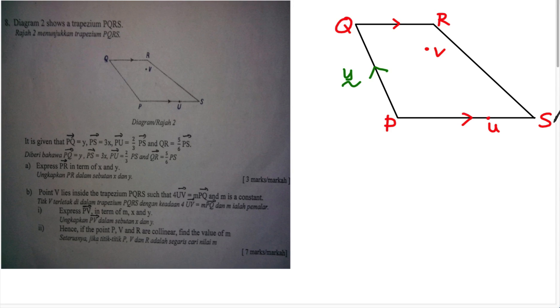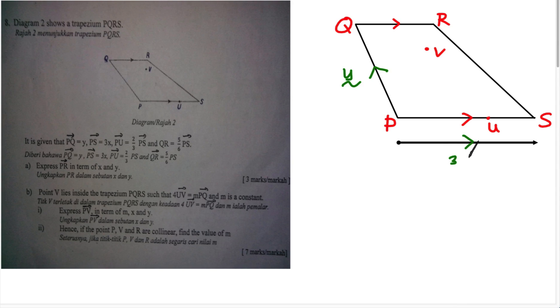So P to S gives me 3x. I draw that out: P to S with an arrow giving 3x. It's important to state all the information from the diagram first before solving anything.